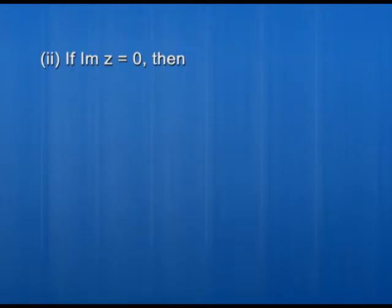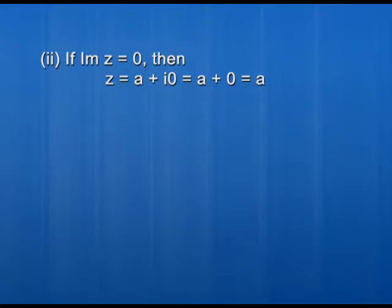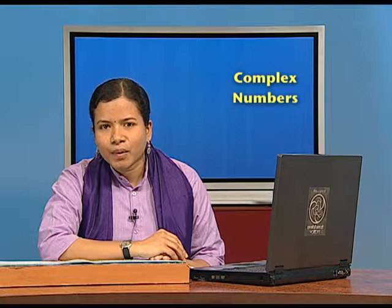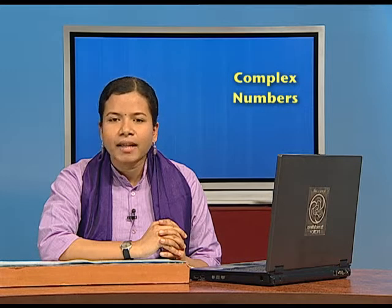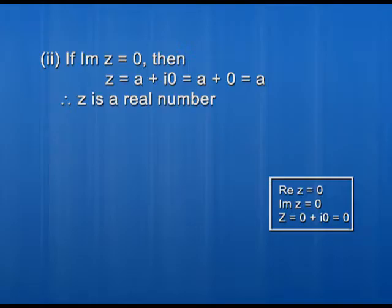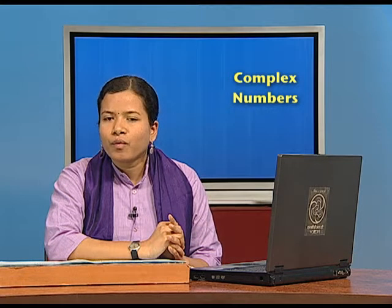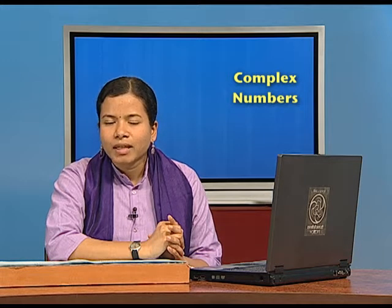Now the second possibility: if Im(z) equals 0, meaning b equals 0, then substituting into z equals a plus ib gives z equals a plus i times 0, which equals a plus 0, which is simply a. Since a is a real number, when Im(z) equals 0, z is a real number. For the third possibility, if both Re(z) equals 0 and Im(z) equals 0, then a equals 0 and b equals 0, giving z equals 0 plus i times 0, which equals 0. So the complex number itself is 0.